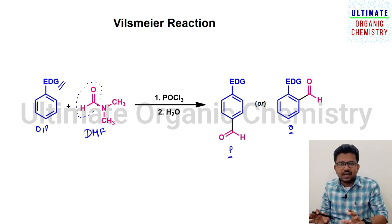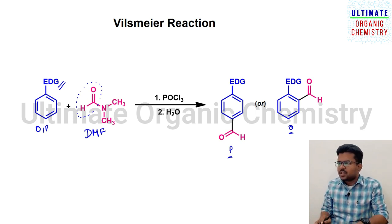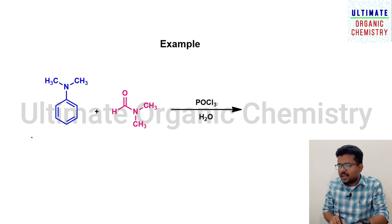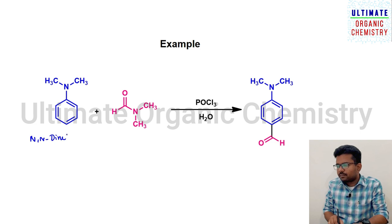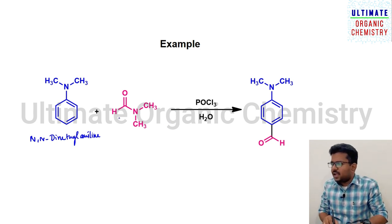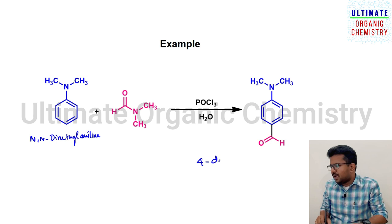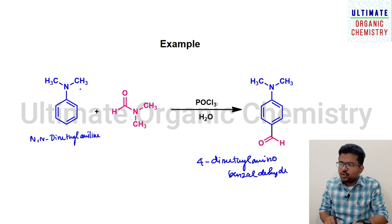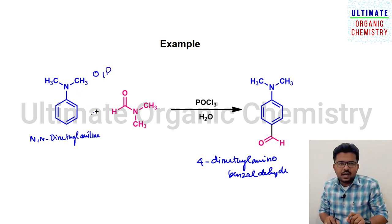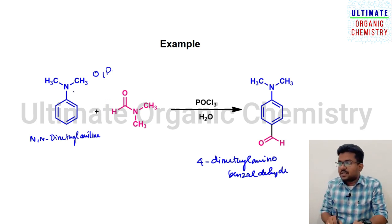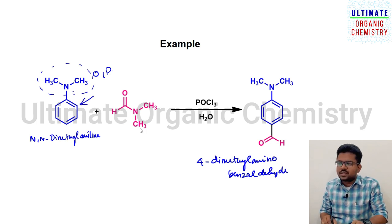Now let us consider a specific case. Take N,N-dimethylaniline treated with standard reaction conditions — DMF, POCl3, followed by water quenching — to provide the final product, 4-dimethylaminobenzaldehyde. Although the amine group acts as an ortho-para director, this is a dialkyl-substituted amine group, meaning it is a bulky group. So reaction at the ortho position is less possible due to steric reasons, and you get exclusively the para product as the major one.